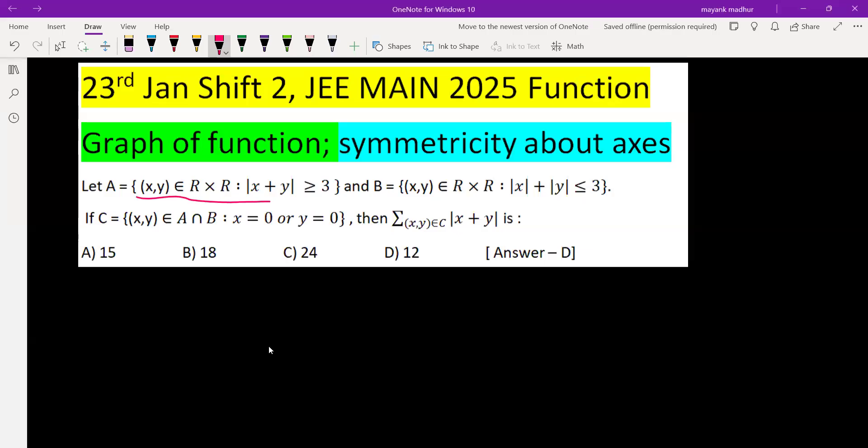Let A be the set which is the collection of all ordered pairs (x, y) where x and y are both real numbers, such that mod of x plus y is greater than or equal to 3. That means x plus y is either greater than 3, or x plus y is less than or equal to negative 3.